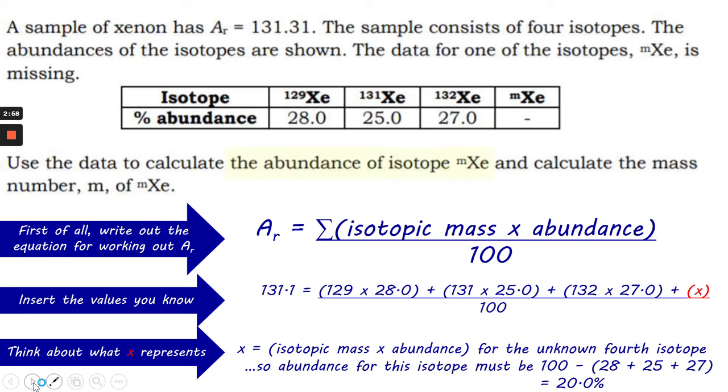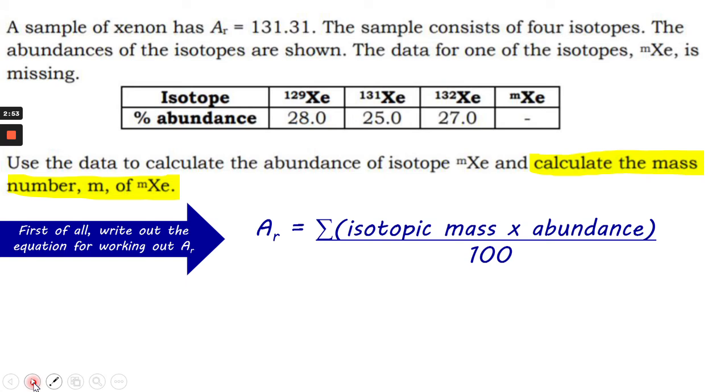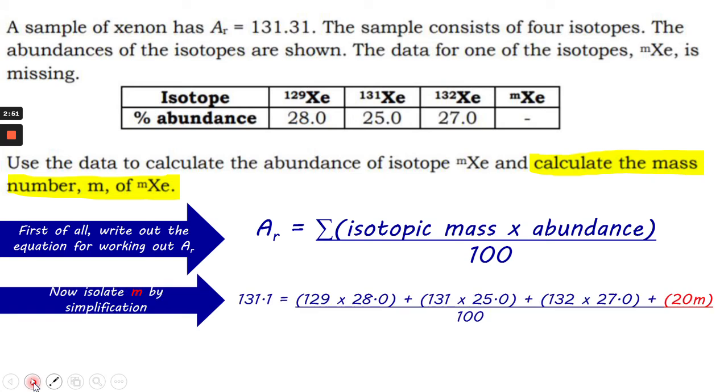The next part is maybe a little bit more applied. That's calculating the mass of that particular isotope. So let's call it 20m. Let's turn X into 20m. Why is it 20? Because we've already worked out that the abundance is 20. So 20 times the mass is what we're trying to get.